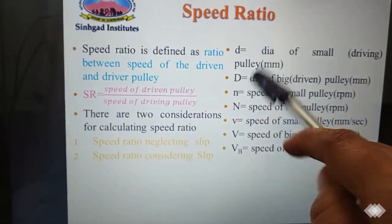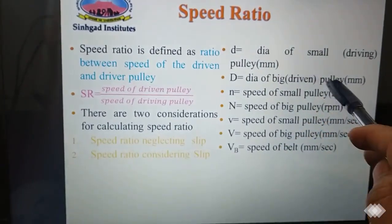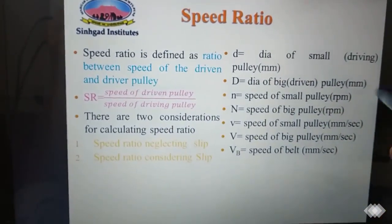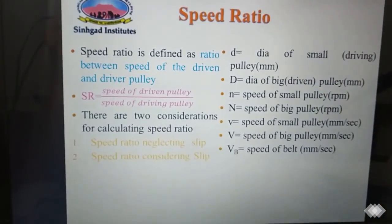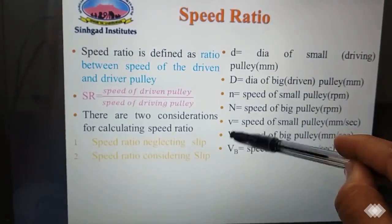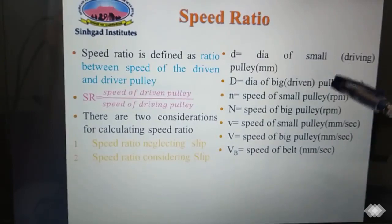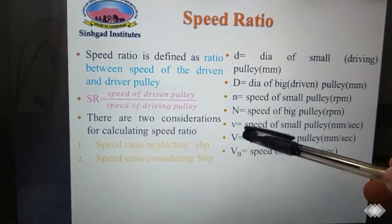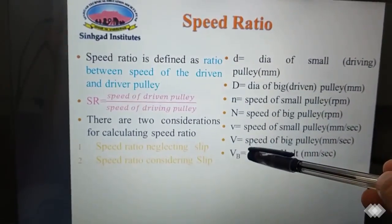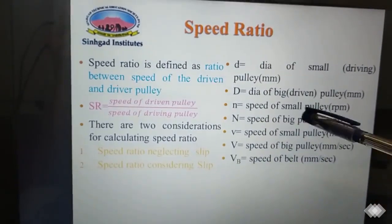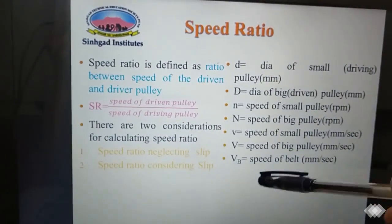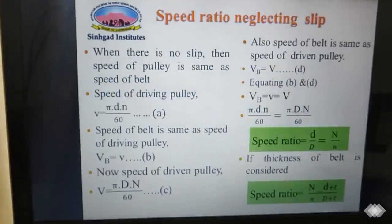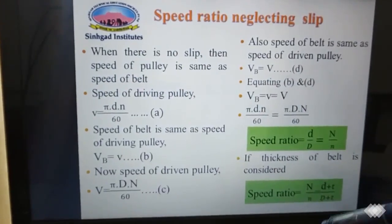For dimensions: small d and capital D are the diameters of the small pulley and large pulley respectively. The smaller pulley is the driving member. Small n and capital N are the RPM of the small pulley and large pulley. Small v and capital V are the speeds of the small pulley and large pulley, and vb is the speed of the belt.